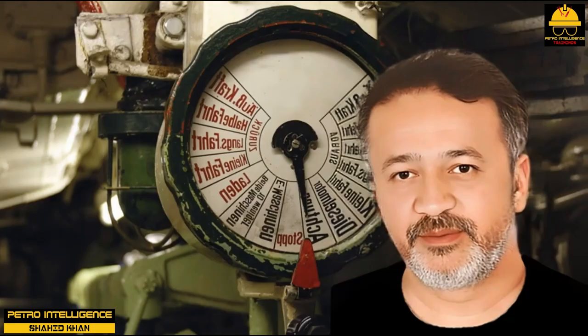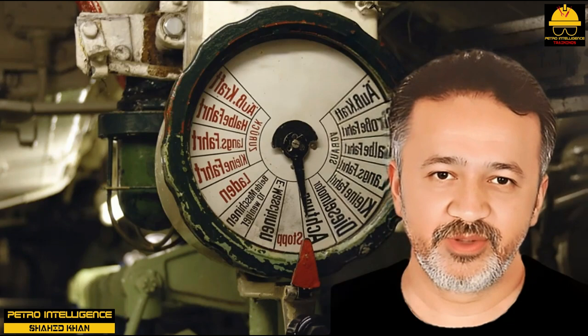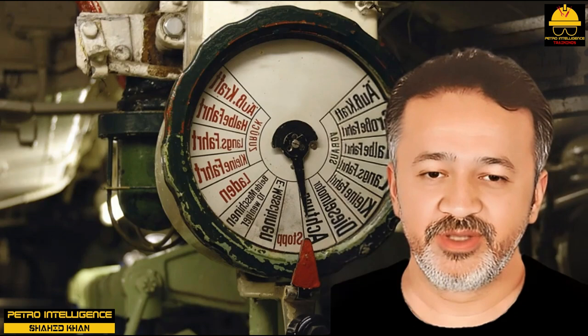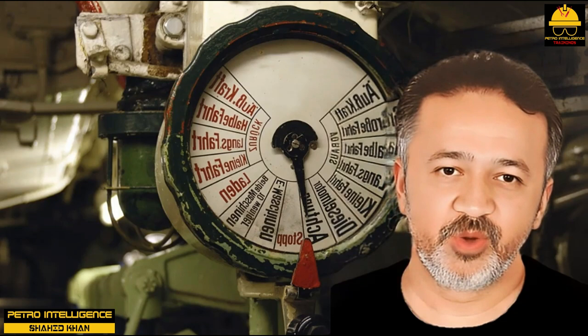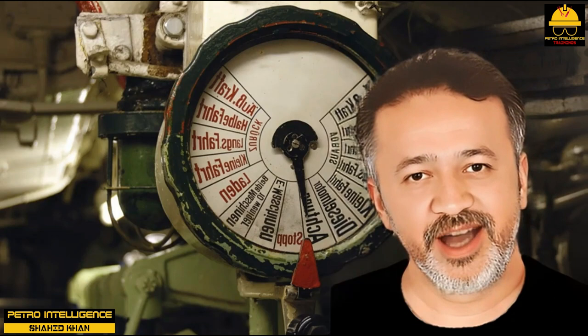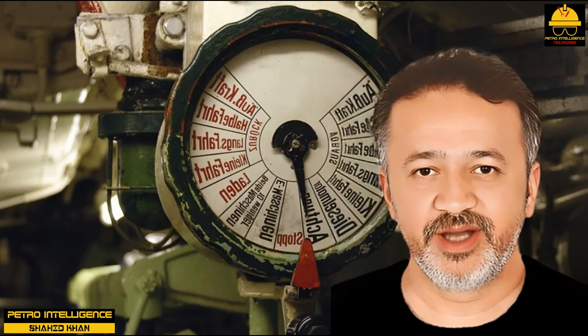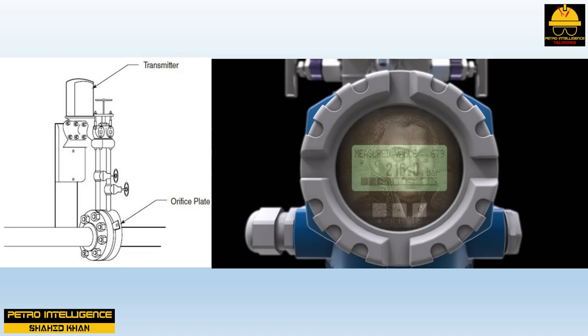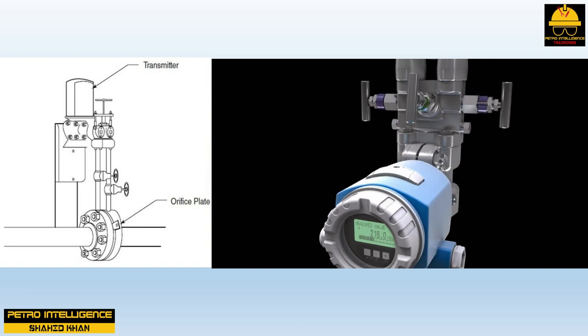Fluid flow through a series of pipes, valves, pumps, and vessels must be known and controlled. Knowing and controlling the flow rate of a particular process stream is critical to the operation of the unit. Continuous chemical reactions require precise measurements to ensure reactants are combined in the proper proportions. Feed rates and product rates must be accurately controlled for economic reasons. Process flow measurements can be taken by any flow meter, but flow control most often requires a flow transmitter.